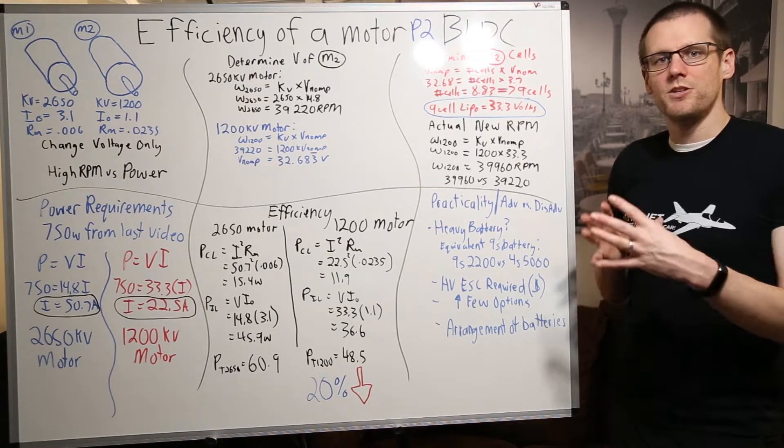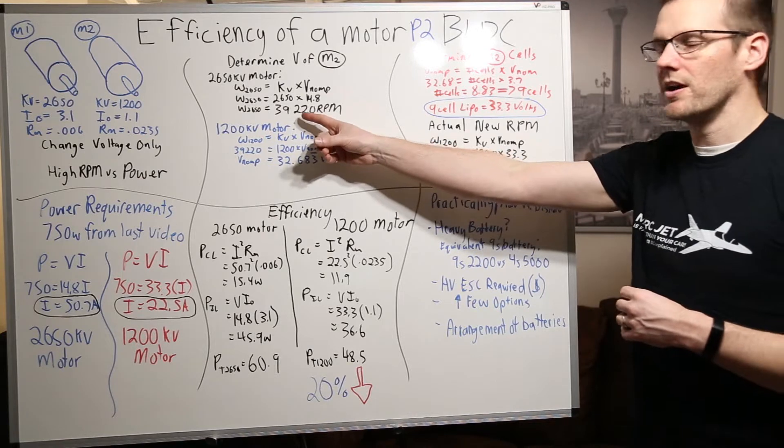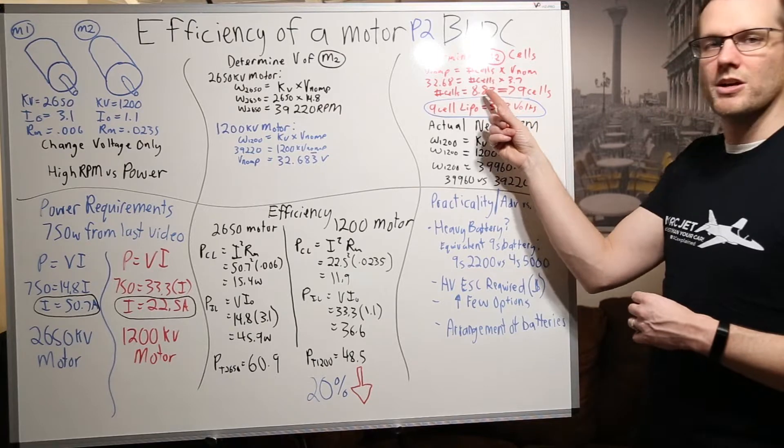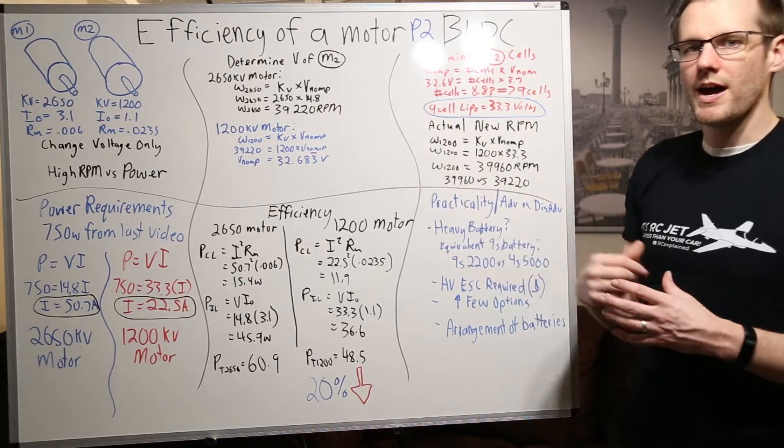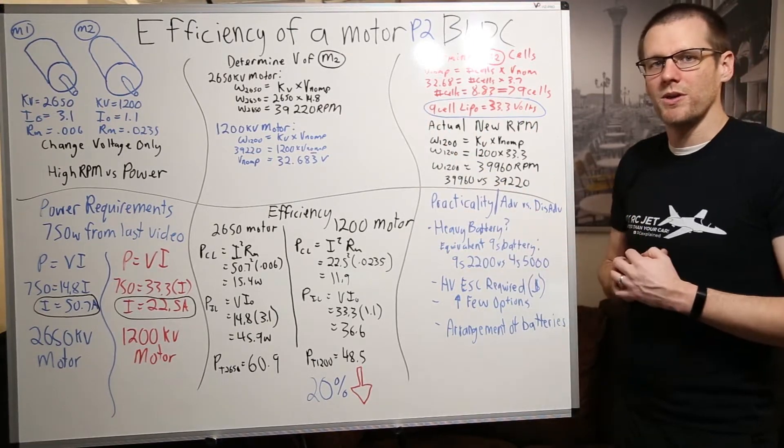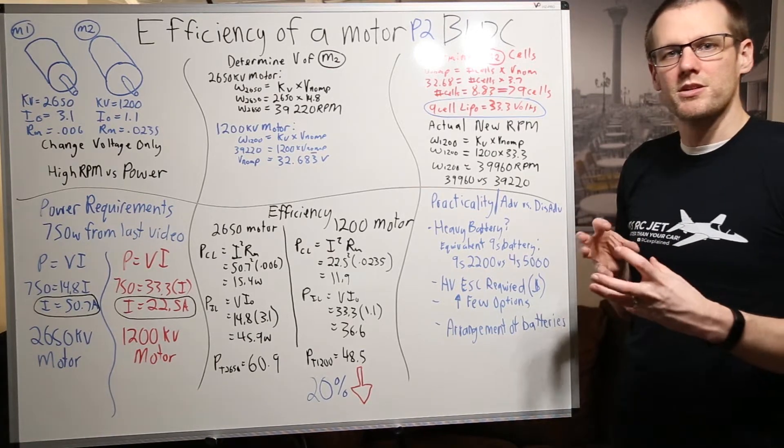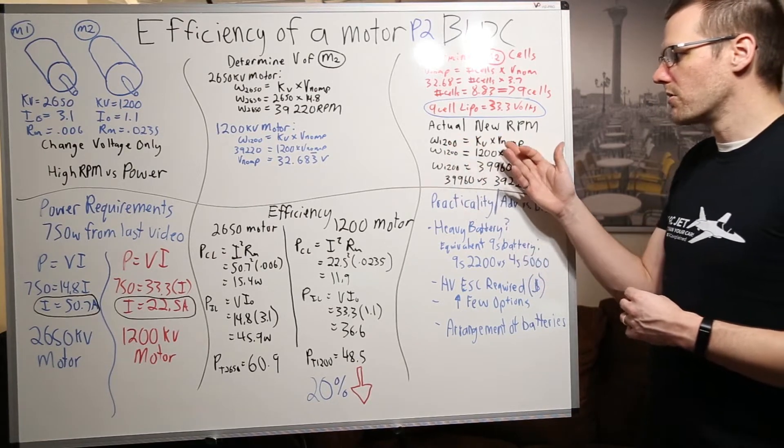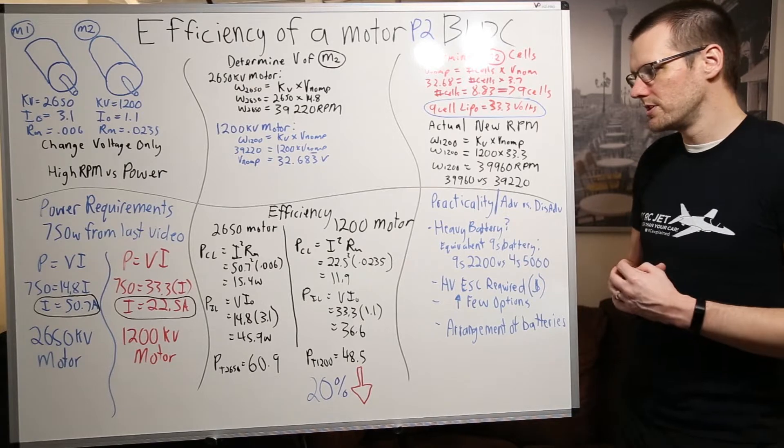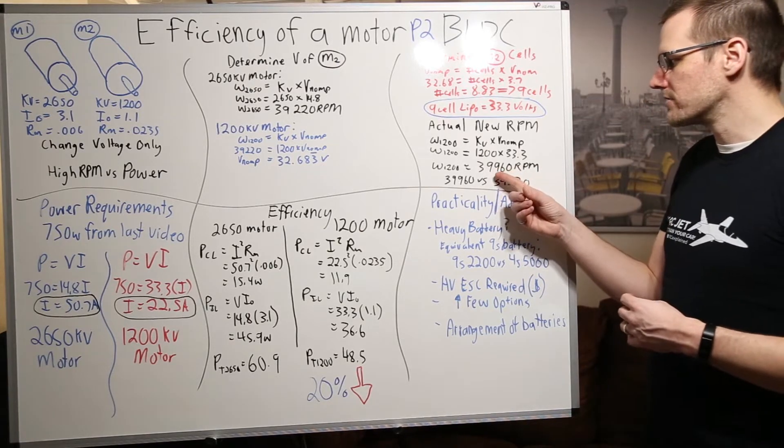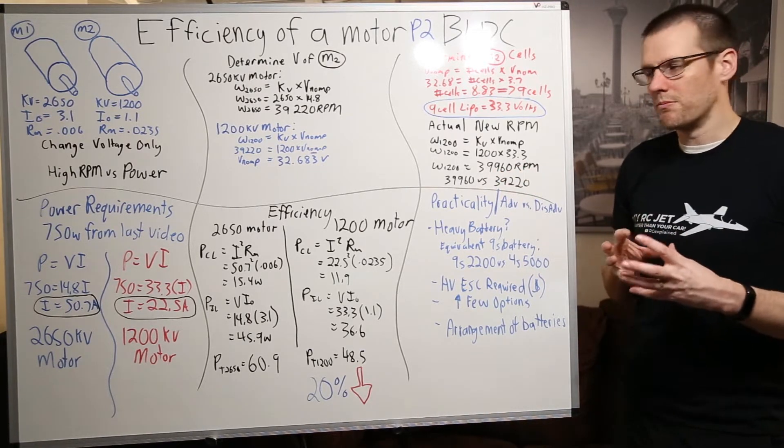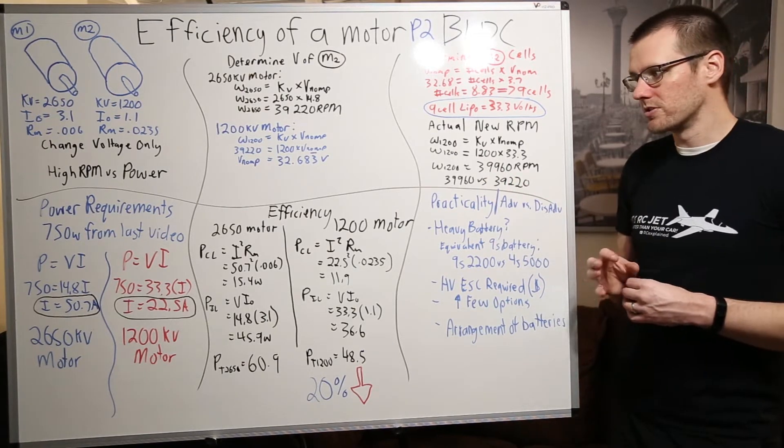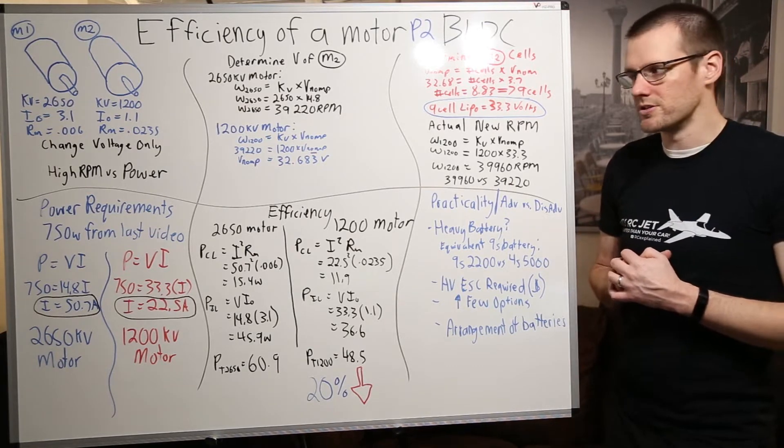Now what we need to do is just make a simple comparison of the RPM that we are getting out of the 2650 kV motor because we did round up in this equation too. We did a little bit of rounding here. We want to compare that against our new RPM that we get from motor number two and make sure they're relatively close within a few percent. We take our output RPM equal to our kV multiplied by the nominal pack voltage and we get 39,960 RPM out of that motor number two. We then compare them and they're roughly within two percent or so. So that is going to be a very good comparison for us to use.